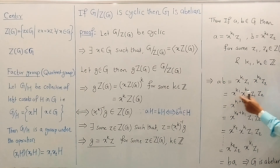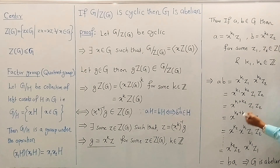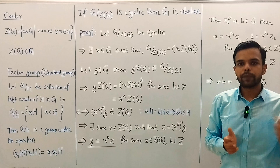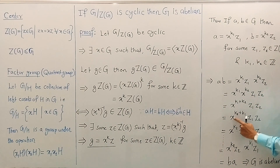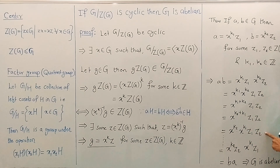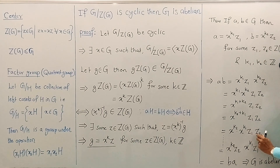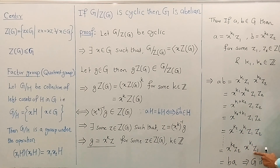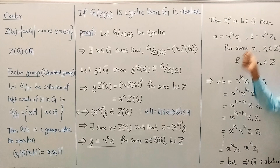So we have x^{k1} times x^{k2} times z1 times z2, which equals x^{k1+k2} times z1 times z2. Since k1 and k2 are integers and integers are commutative with respect to addition, k1 plus k2 equals k2 plus k1. So this equals x^{k2+k1} times z1 times z2, which is x^{k2} times x^{k1} times z1 times z2. Again, since z2 is an element of Z(G), it commutes with z1 and with x^{k1} as well. So shifting z2, we get x^{k2} times z2 times x^{k1} times z1, which is nothing but b times a. So for arbitrary elements a, b in G we have ab equals ba, and this shows that G is abelian.